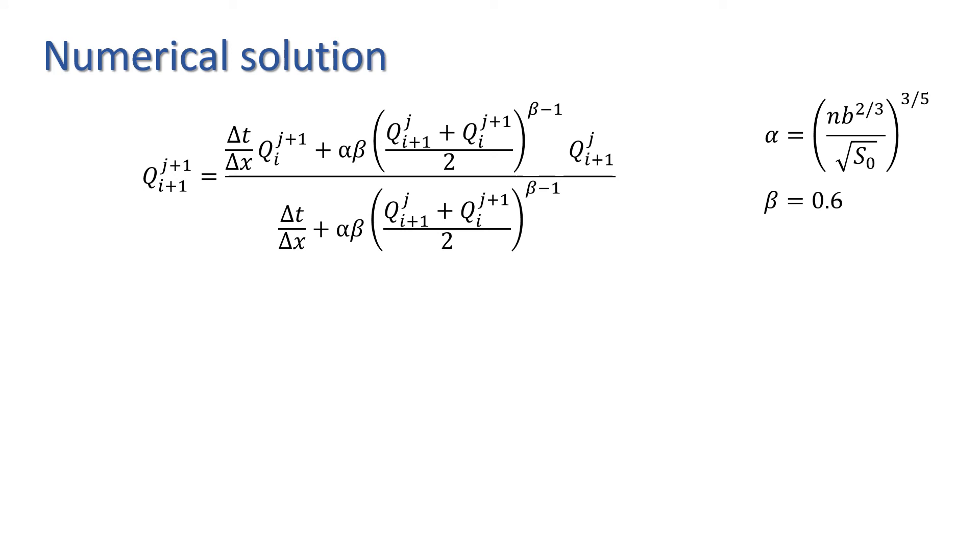We're now in a position to put in some numbers. To find α, we'll need to know the width and slope of the channel, and make an assumption about the roughness, i.e. a value of Manning's coefficient. And to define the problem, we'll need the length of the channel, an initial condition, and an inflow hydrograph providing an upstream boundary condition.